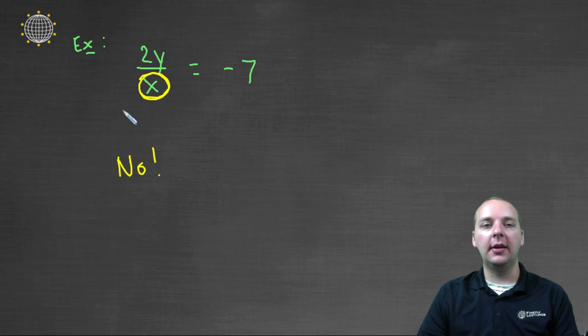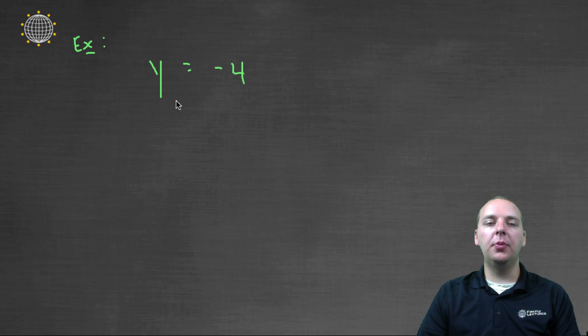If we graphed this guy, this guy's graph would not be a continuous straight line. Alright, lastly, we threw an oddball question in here. Y equals negative four.